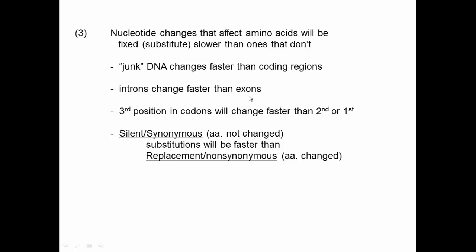Introns change faster than exons — the rate of substitution in introns is higher than in exons for the exact same reason as intergenic distances. Third positions in codons substitute faster than the second or the first positions because these more often result in silent mutations which can become silent substitutions. In general, silent or synonymous substitutions — the ones where the amino acid is not changed — will be faster than replacement or non-synonymous substitutions.